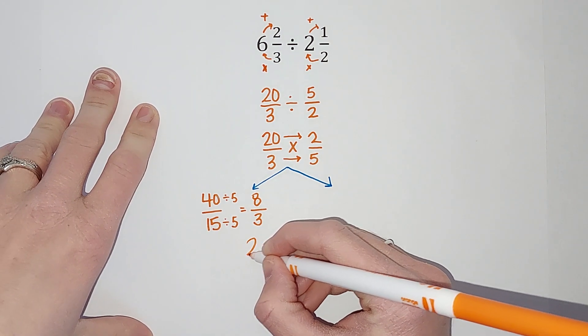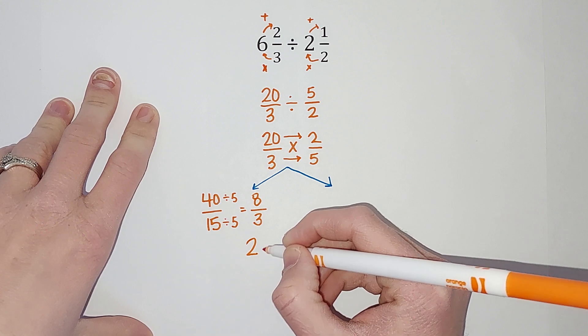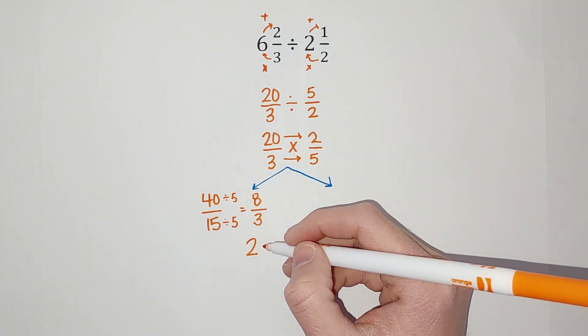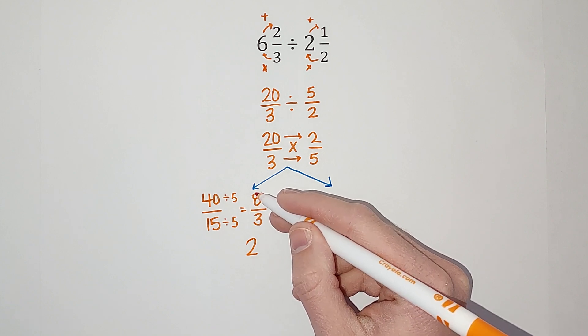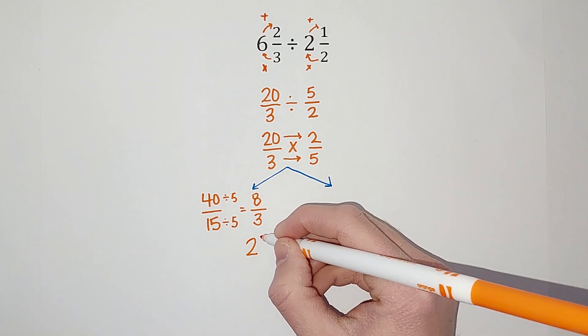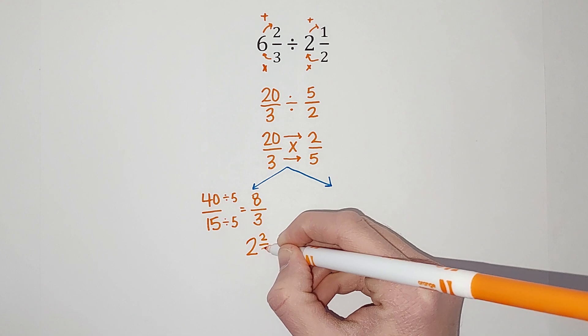So we just see how many times does 3 go into 8. Well it goes in twice, right? Because 2 times 3 is 6. And then so that would leave me with 2 left over, right? Because 8 minus 6 gives me 2. So this would be 2 and 2 thirds.